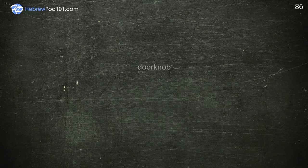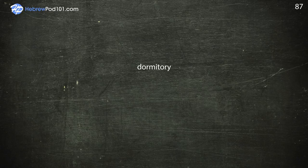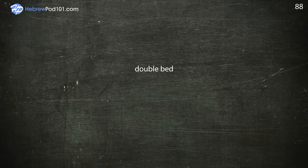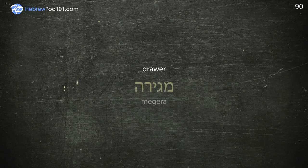Doorknob — Yadit Adelet. Dormitory — Meunot. Double bed — Mitah Zugit. Drain — Lenakaz. Drawer — Megira. Dresser — Shida.